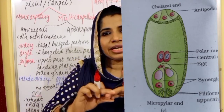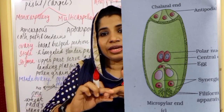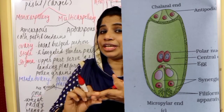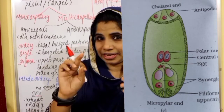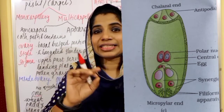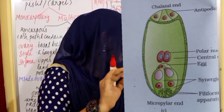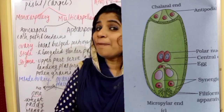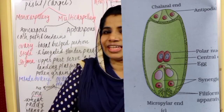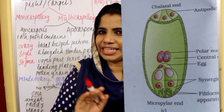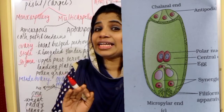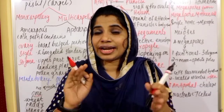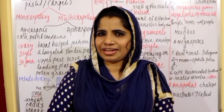The large central cell contains two polar nuclei. In total, the embryo sac contains 8 nuclei — 2 polar nuclei in the central cell, 3 at the micropylar end (egg + 2 synergids), and 3 antipodals at the chalazal end.